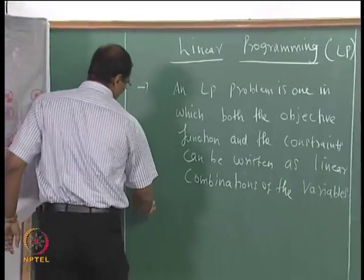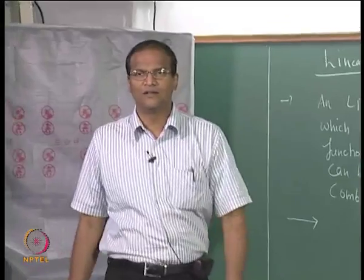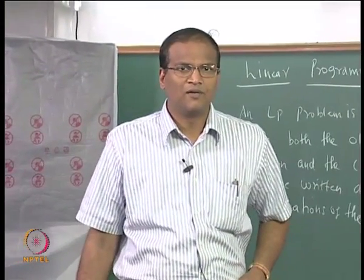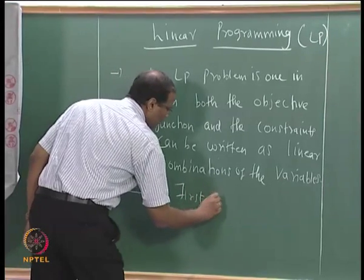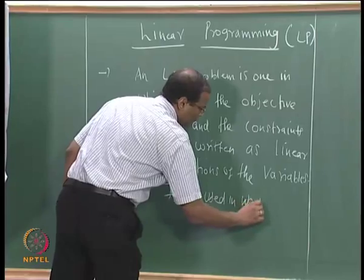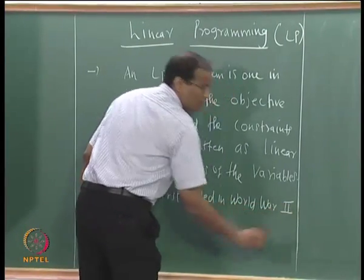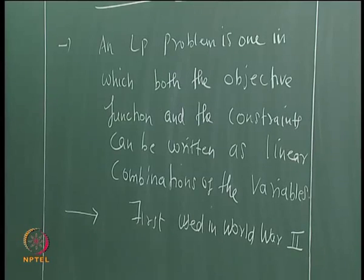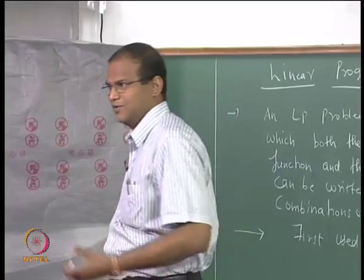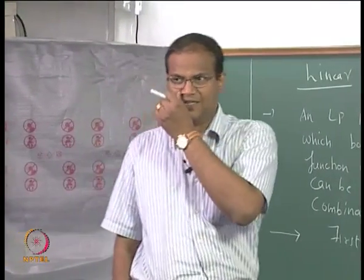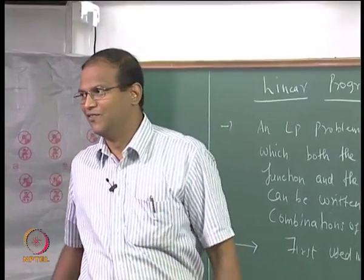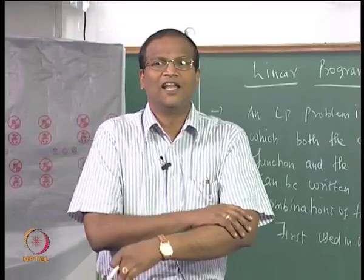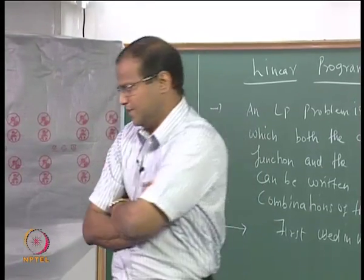What do you think would be the origin of LP? When did it originate? World War 2, obviously. It was first used in World War 2. The possible problems for which LP must have been used: optimal allocation of men, optimal allocation of ammunition, optimal allocation of aircraft, optimal allocation of artillery — to maximize your benefit and strategy to defeat the enemy. It originated with the allied forces, in the United Kingdom, in the 1930s and 40s.